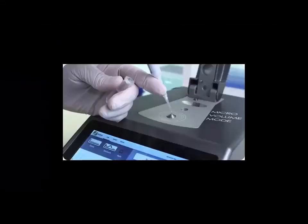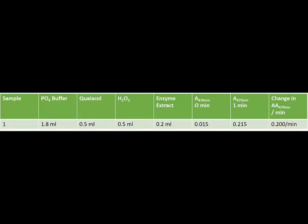Immediately, the absorbance at 470 nm will be taken. After one minute of reaction, another absorbance reading will be taken at 470 nm. The change in absorbance will be calculated, and the change in absorbance per minute per gram fresh weight is the activity of peroxidase.